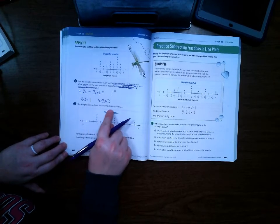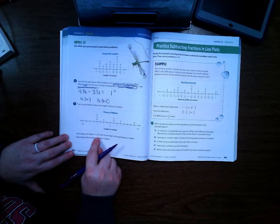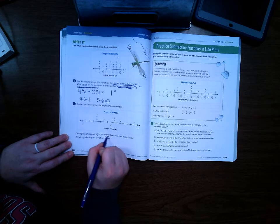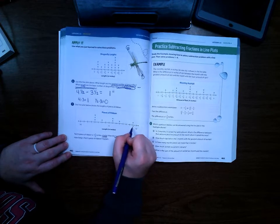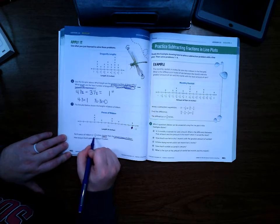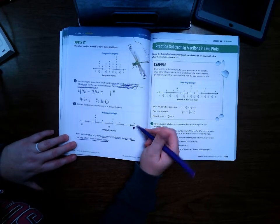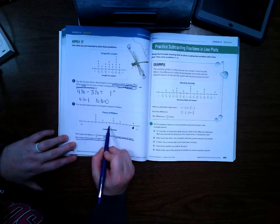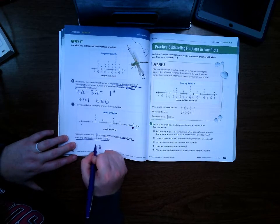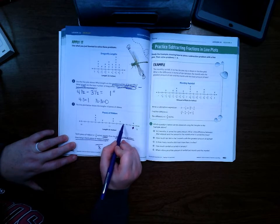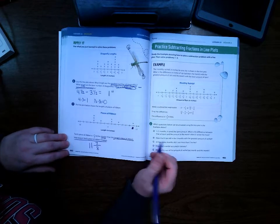The line plot below shows the length of pieces of ribbon. Terry's piece of ribbon is 1 and 5/8 inches shorter than the longest piece of ribbon. So here's our longest. How long is Terry's ribbon? First we have to figure out this length. We're working in eighths. This is 1, 2, 3, 4, 5, 6, 7, 8, but we can't forget the whole number. So our longest piece is 11 and 7/8.